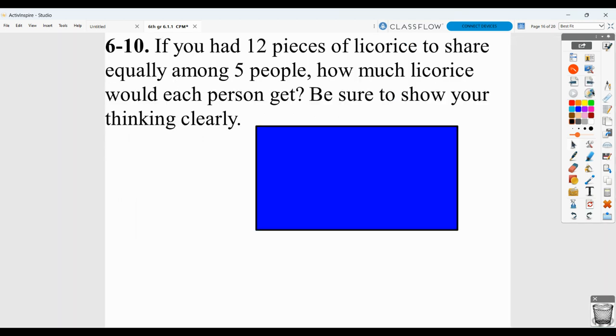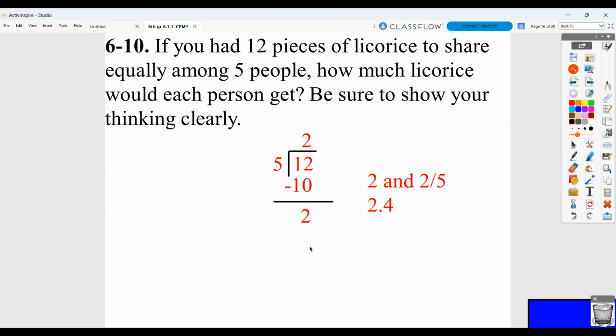If you had 12 pieces of licorice to share equally amongst 5 people, how much licorice would each person get? Again, you can show it with the process of making a mixed number, 12 divided by 5. Everybody would get 2 whole pieces. Subtract, we get 2 parts. 2 parts out of 5 would be 2 fifths. So everybody would get 2 and 2 fifths pieces. Or you could put in your decimal point, your 0, get your decimal answer. 2 and 4 tenths is equal to 2 and 2 fifths. Or you could also show the picture. Show the 12 pieces of licorice being divided equally amongst the 5 people.